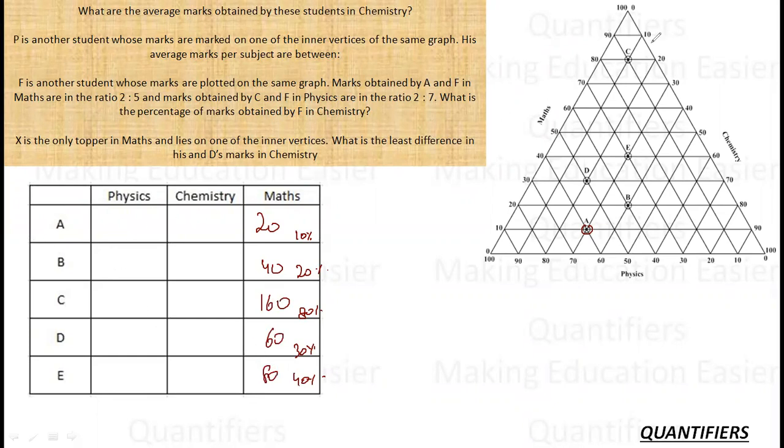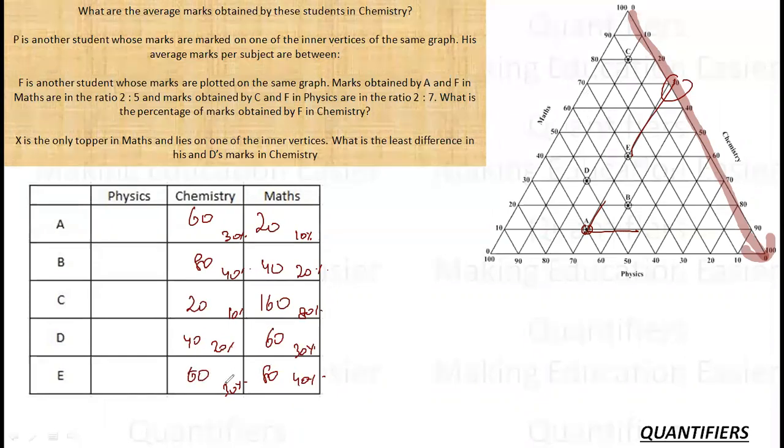Similarly let's see for Chemistry. Now for Chemistry where do I need to move? For Chemistry I need to move this way. And I will see the first line each time. So for A, one line is this, one line is this. I will take this one. So for Chemistry it will be 30%. For B it is 40%. For C it is 10%, D it is 20% and for E it is 30%. So in terms of marks it is 60, 80, 20, 40 and 60. These are in terms of marks.